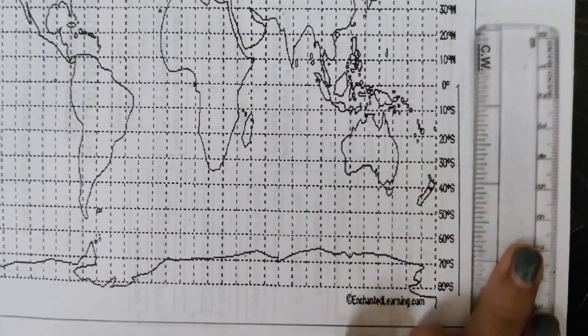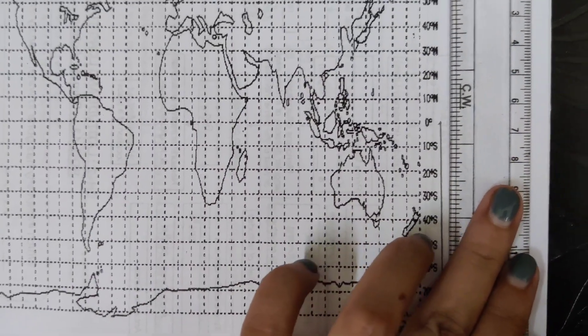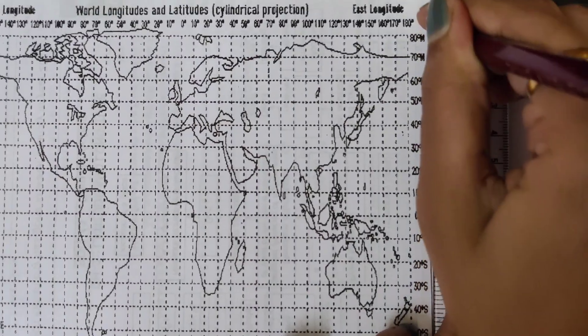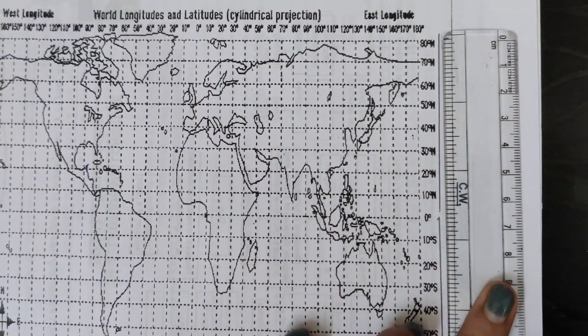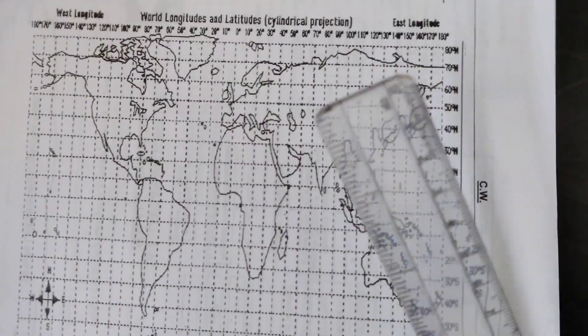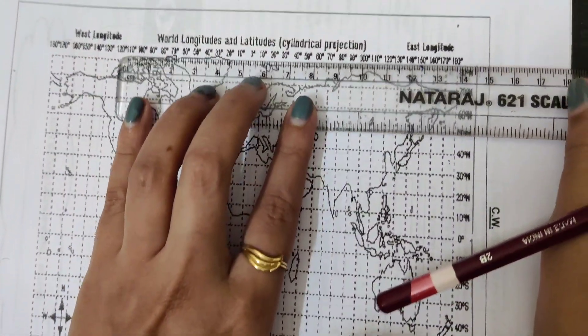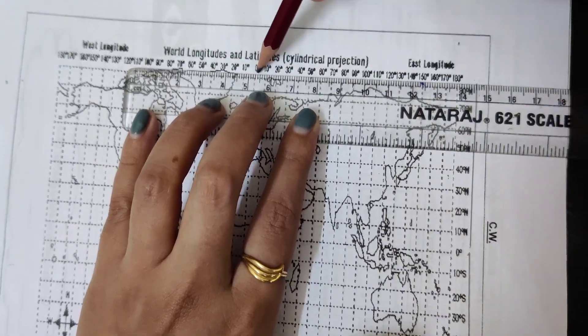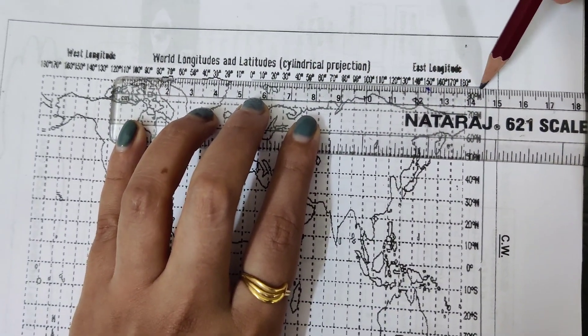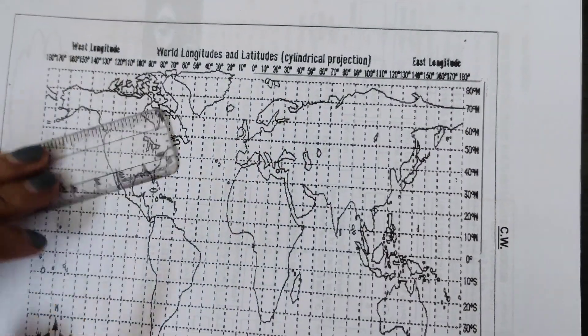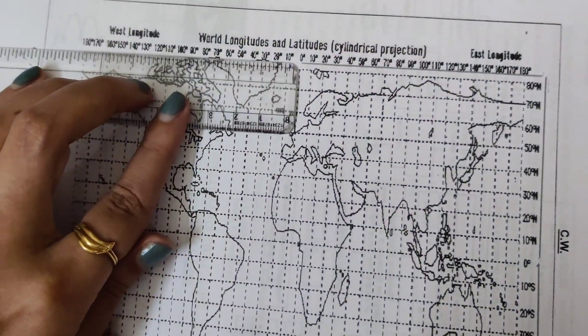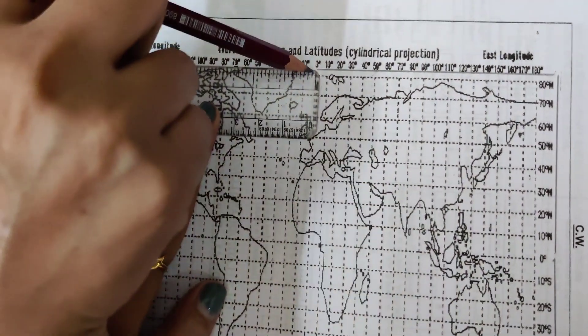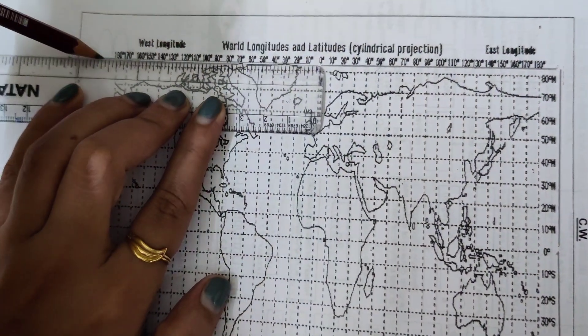From zero to the upward direction, this is north. This is very important while marking. This direction is east longitude, and from zero to the west direction, this is west longitude.